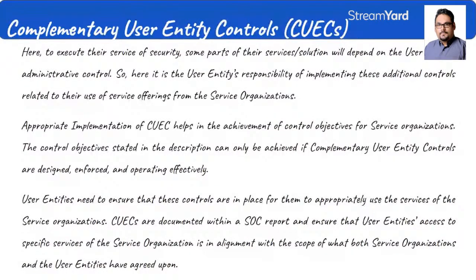Appropriate implementation of CUECs helps in the achievement of control objectives for the service organization — this is a part of the SOC report. The control objectives stated in the description can only be achieved if complementary user entity controls are designed, enforced, and operated effectively. CUECs are documented within a SOC report and ensure that user entities' access to specific services is in alignment with the scope that both the service organization and the user entity have agreed upon.